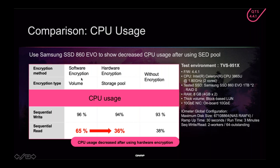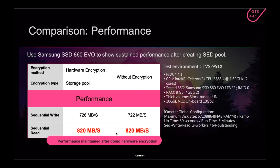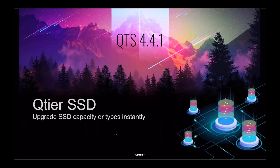In this example, when the NAS handled the encryption the CPU was at 65%, but with SED SSDs it can be just 36% — basically the NAS CPU does not have to work any harder than if you didn't have encryption at all. We also compared SED hardware encryption to no encryption and the performance was about the same. That's what SED is about: having encryption without the performance penalty.